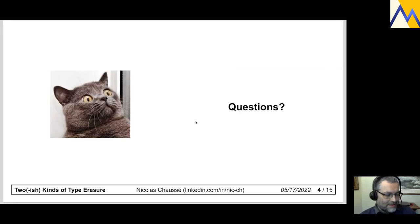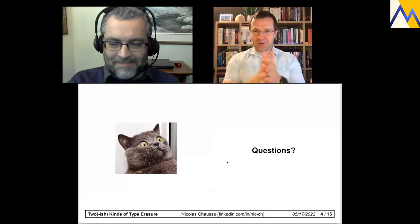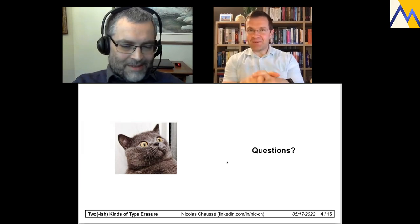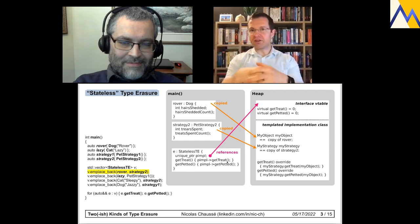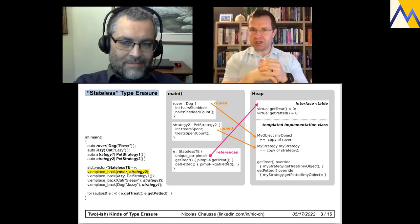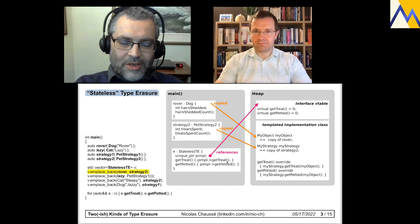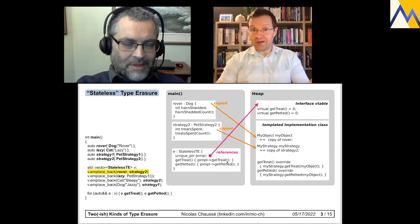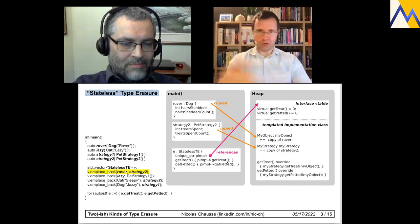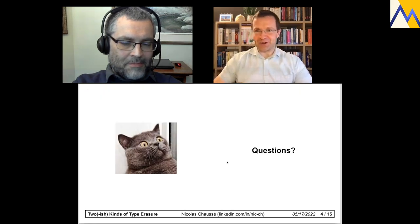A question: the stateless type-erasure wrapper is the one point where you link everything together — the objects are independent and don't know about each other. Yes, exactly — a copy of the object and strategy is always made. And as noted, this is what value semantics means: you can copy it, move it around; it's not just a pointer, it really is a value object.